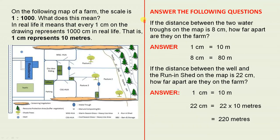On the following map of a farm, the scale is 1 is to 1,000. What does this mean? In real life, it means that every 1 cm on the drawing represents 1,000 cm in real life. That is, 1 cm represents 10 m.